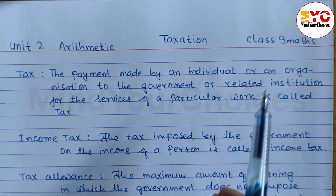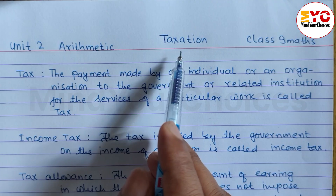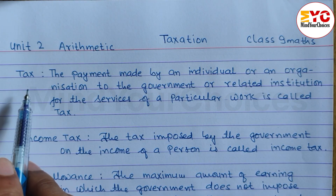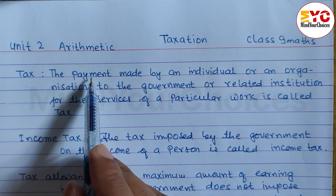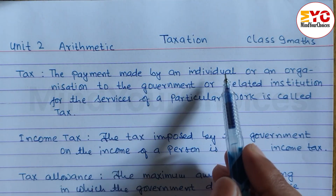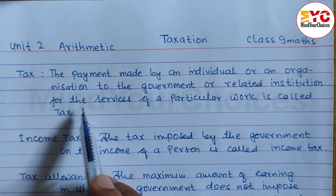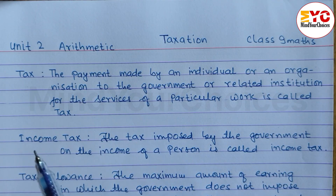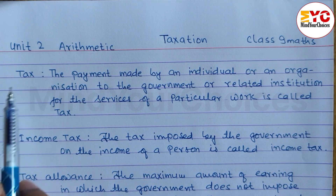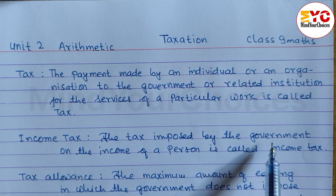Hello everyone! This is a Class 9 Maths, Unit 2 - Taxation chapter video. Let's start with definition number one: Tax. The payment made by an individual or an organization to the government or related institution for the service of a particular work is called a tax. Income tax is one example of tax imposed by the government.